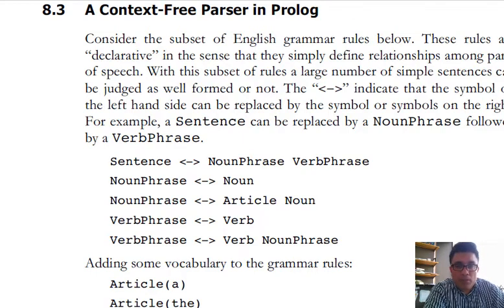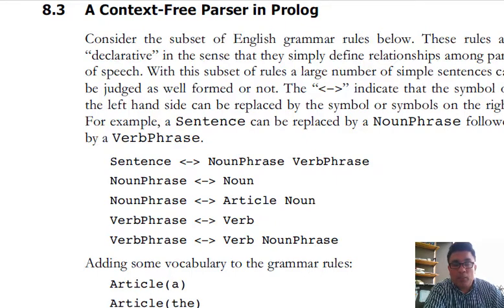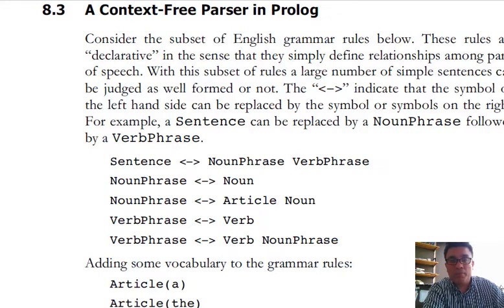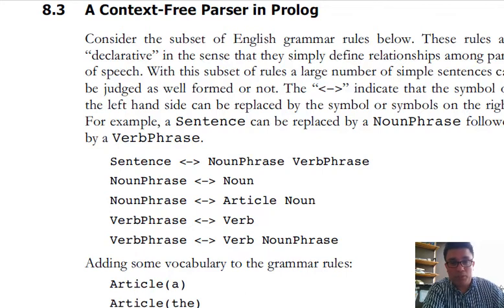To continue with our study of natural language processing, we will go over the implementation in Prolog of an algorithm for doing probabilistic parsing in Prolog. To accomplish our goal, we will use the companion resource book that comes with the textbook, which lists several AI algorithms implemented in Lisp, Prolog, and Java. I've placed a copy of that book in the content section for this class.